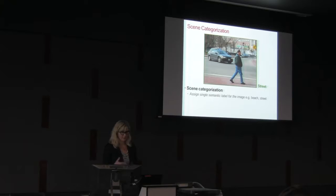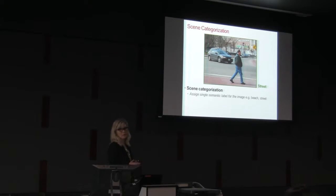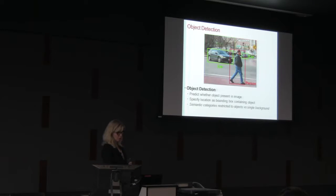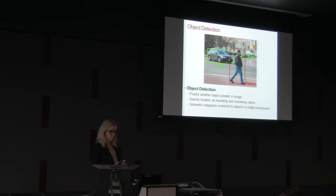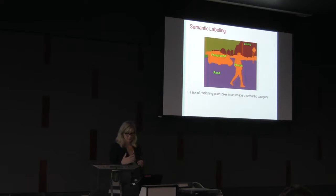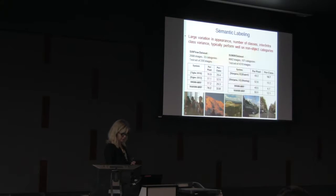This just gives you a feeling of what different types of semantic labels you can have. You can associate a label with the entire image and call it a street scene, or identify a library and an intersection, or describe objects appearing at different locations and different scales, or you can go after exact pixel-level labeling. This highlights that this is a really difficult problem with a lot of variations.